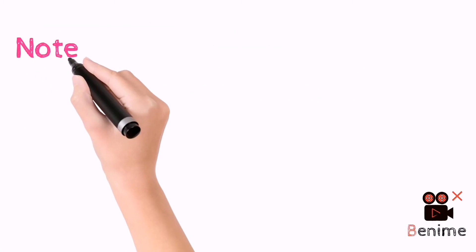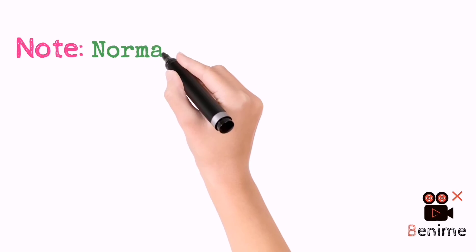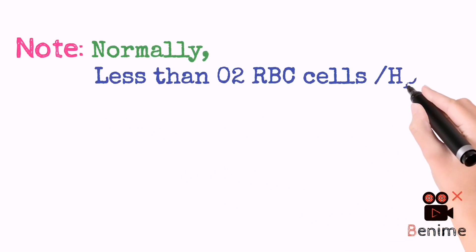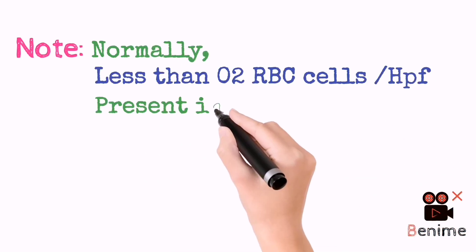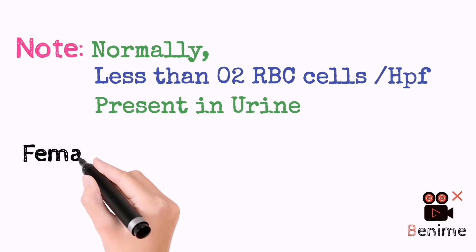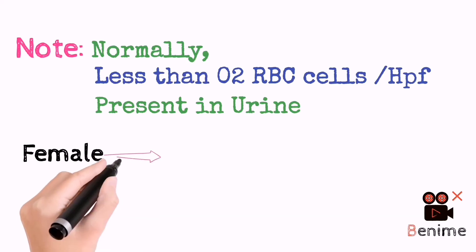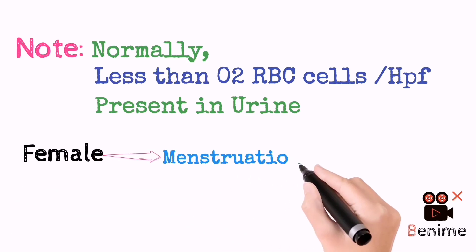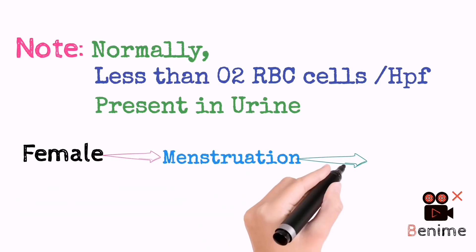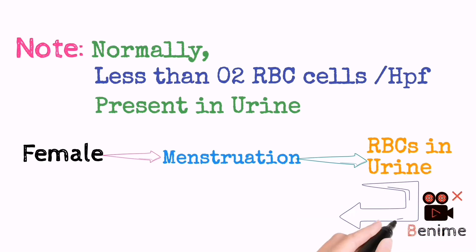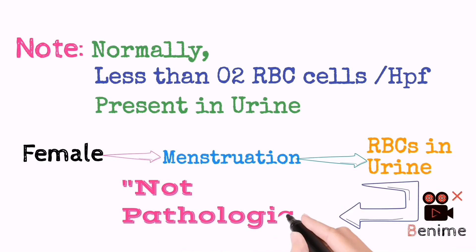Remember, normally less than two RBCs per high power field are present in urine. Females having menstruation may have a large count of RBCs in urine, but remember, it is non-pathological.